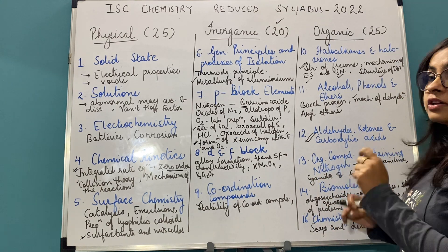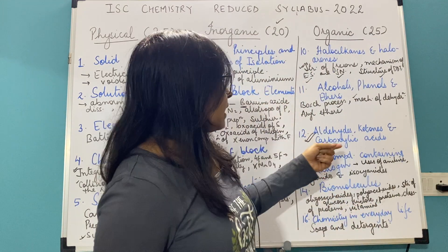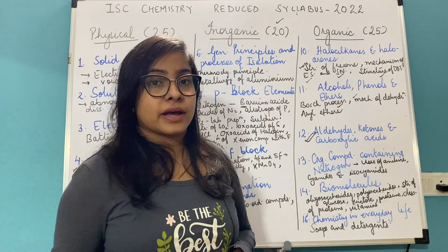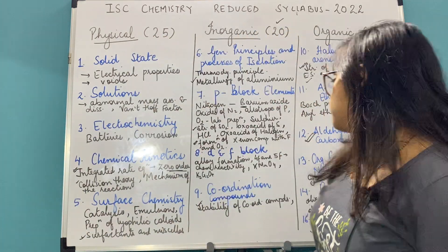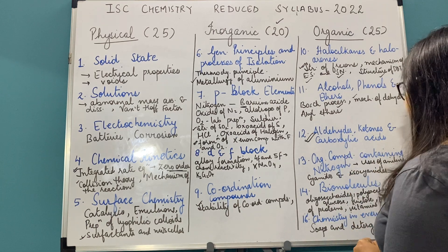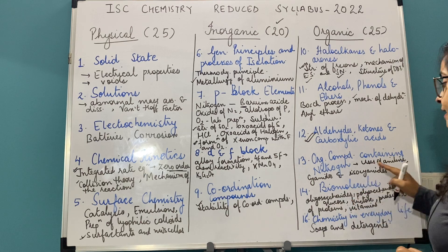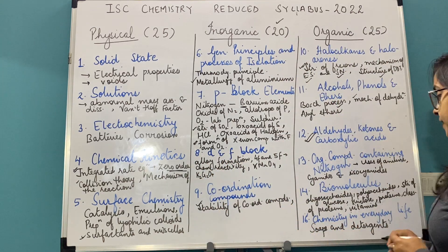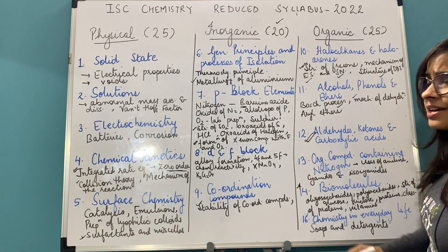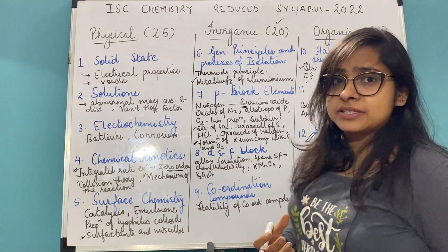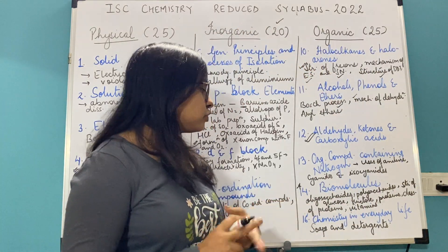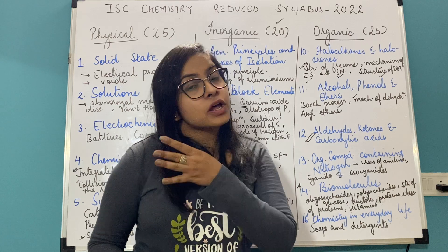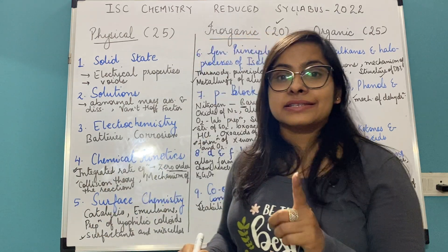One lesson which has not seen any reduction is Aldehydes, Ketones and Carboxylic Acids — all topics and sub-topics are intact, no reduction has been done. If any reduction is done later we will update you. Coming to Organic Compounds Containing Nitrogen: uses of aniline have been reduced, but structure and everything else is still in place. Only uses are reduced. Cyanides and isocyanides remain. Coming to Polymers: the entire chapter has been removed, just as it was last year. Polymers is no longer in your syllabus for the upcoming March 2022 exams.